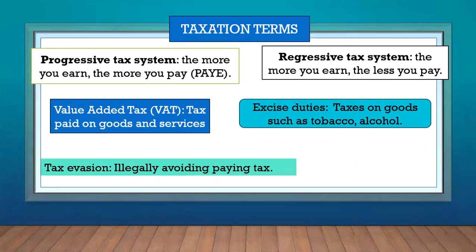Let's look at some taxation terms. The first is the progressive tax system — this is the tax system in South Africa. The more money you earn, the more tax you'll pay. Other countries have a regressive tax system where the more you earn, the less you pay. It depends on the system that the country adopts.